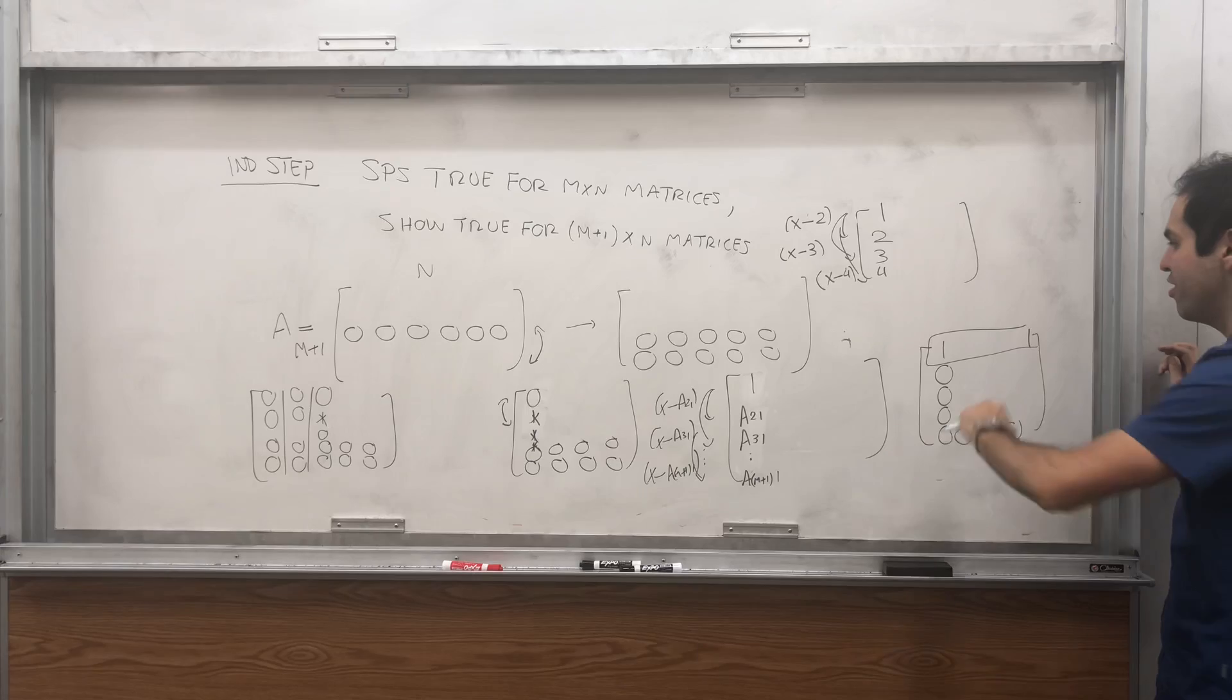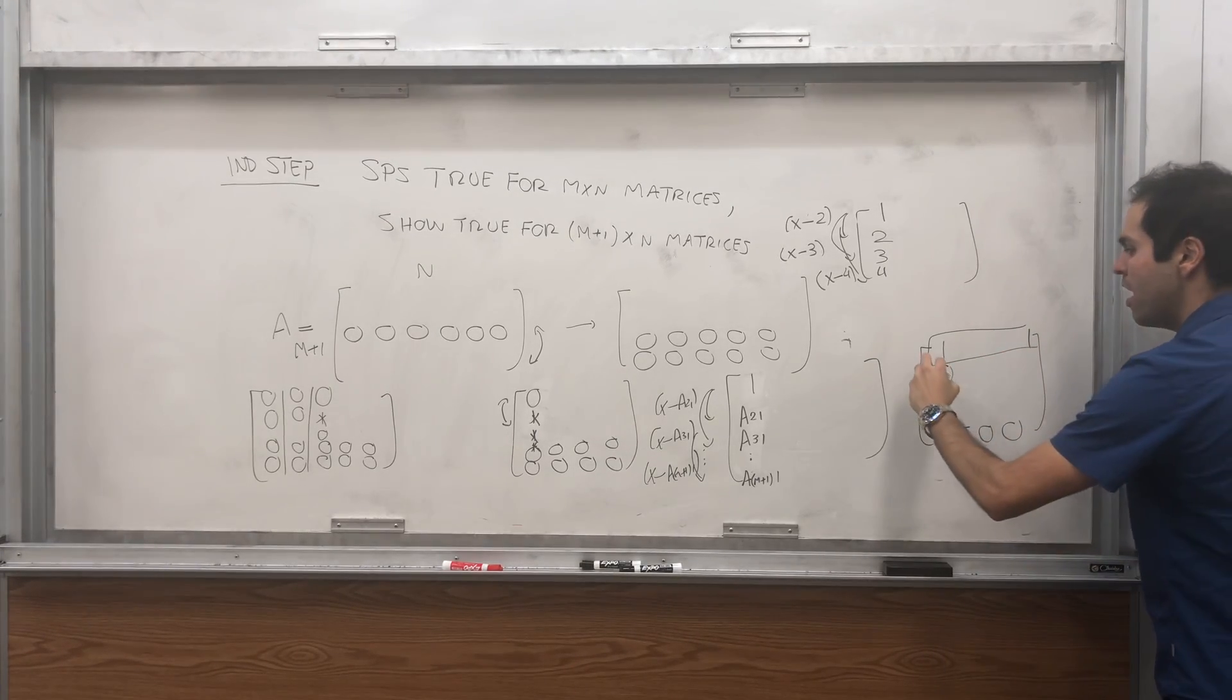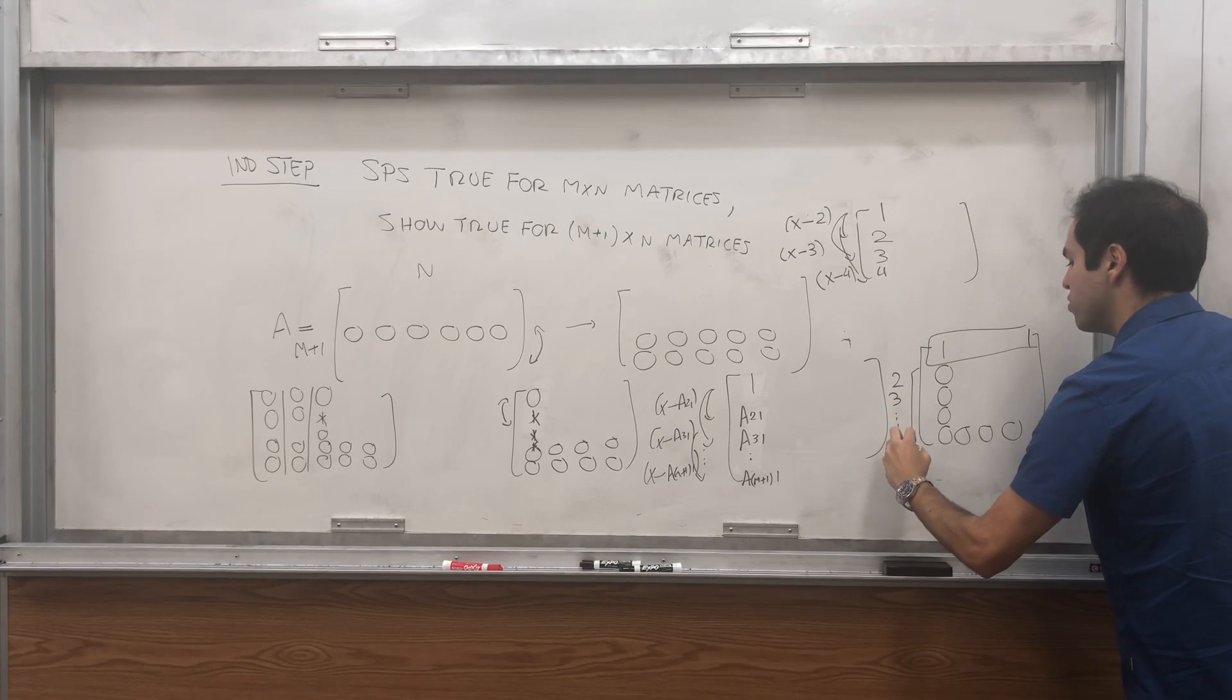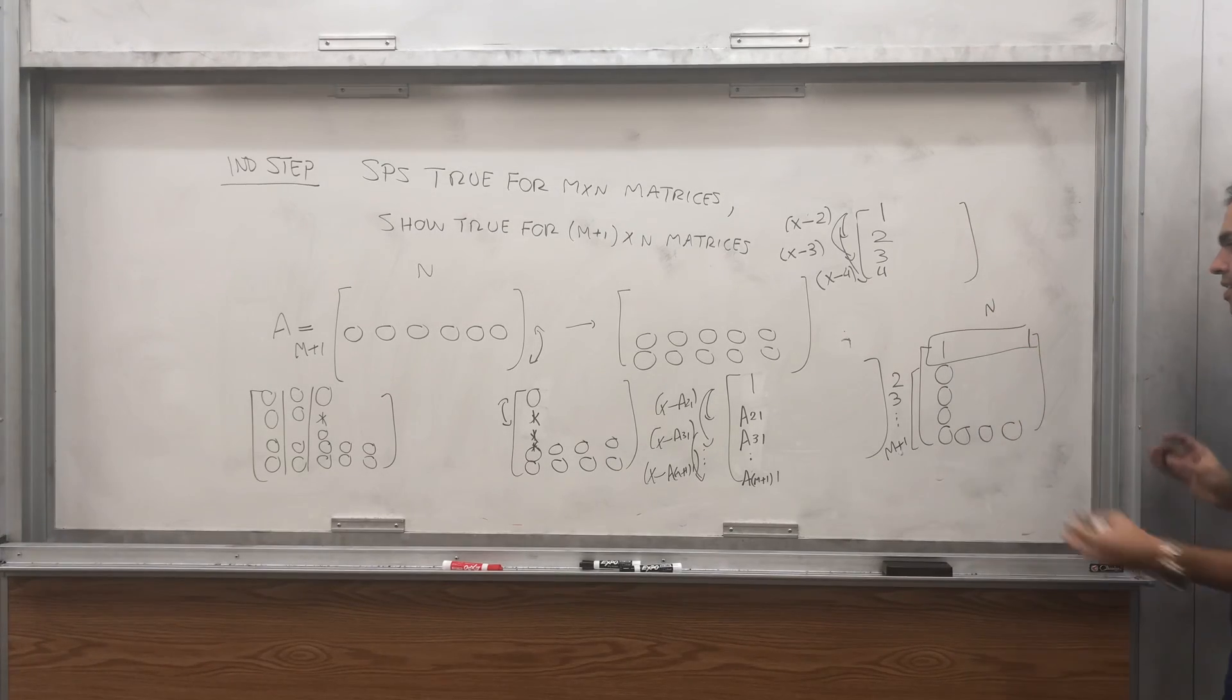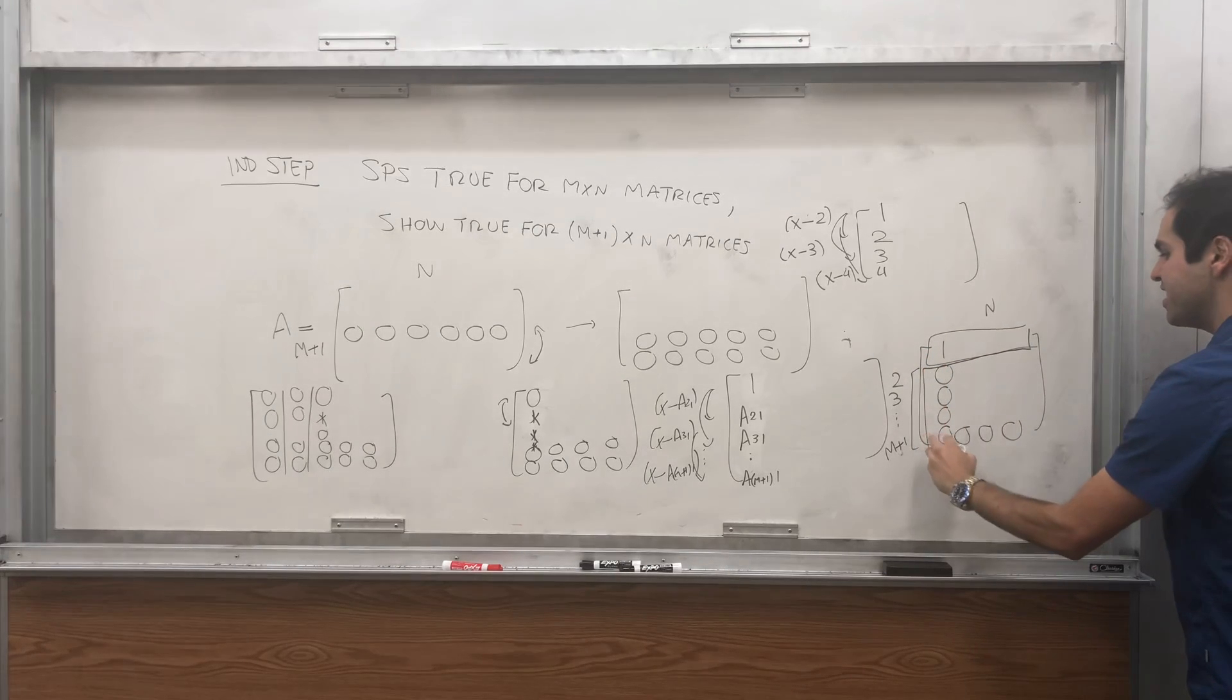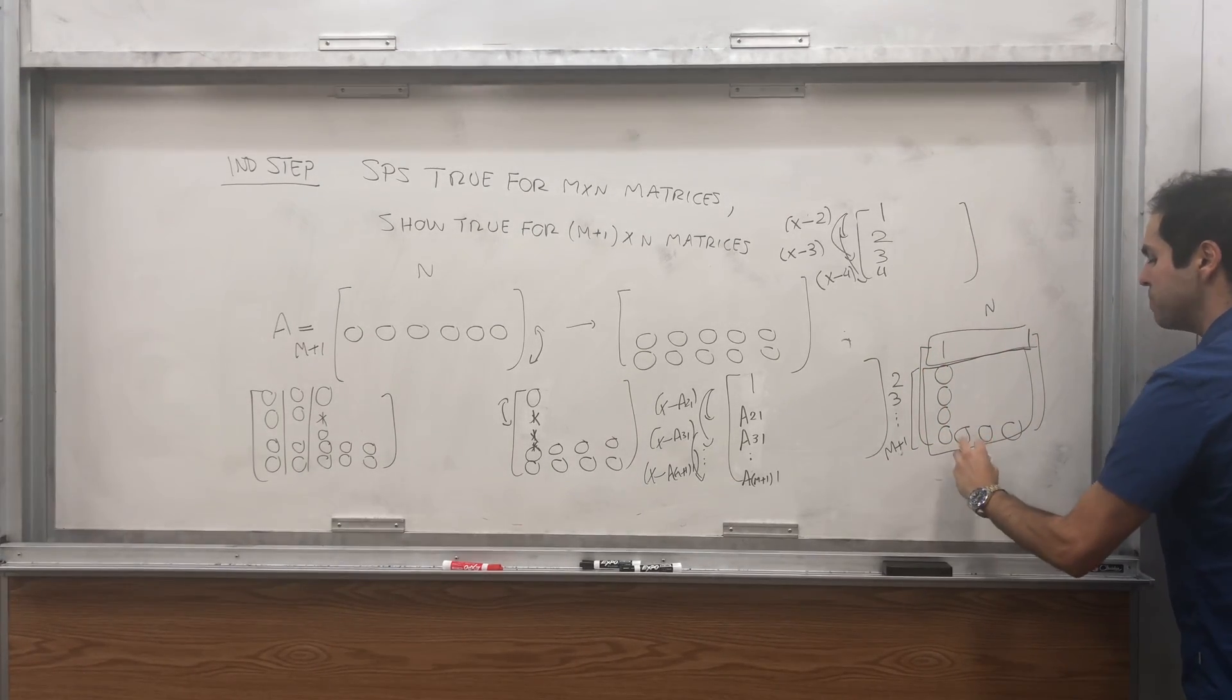We are in row echelon form for this first row. And then we have another matrix with rows two, three, dot, dot, dot, m plus one. And essentially what you do, you do induction on this second matrix here. So call this matrix B.